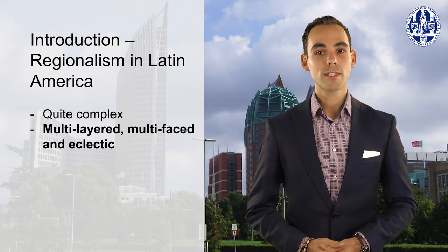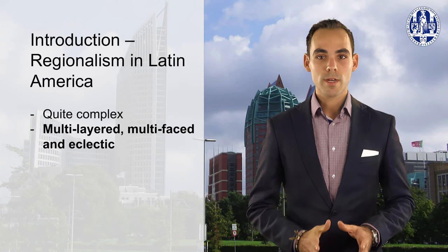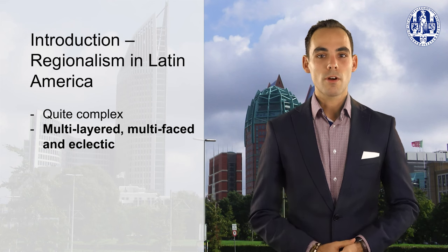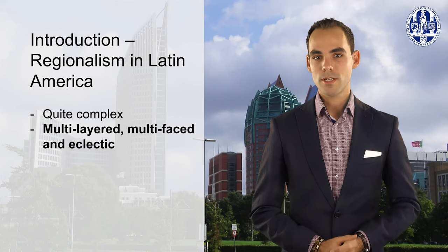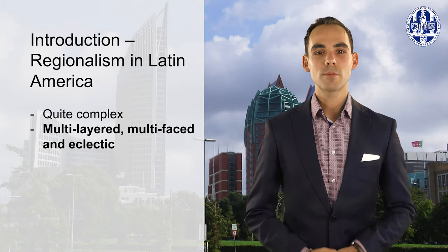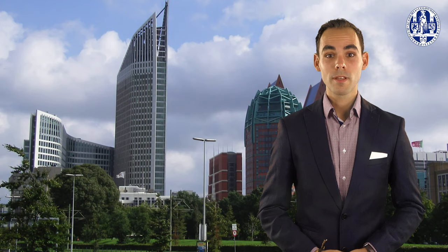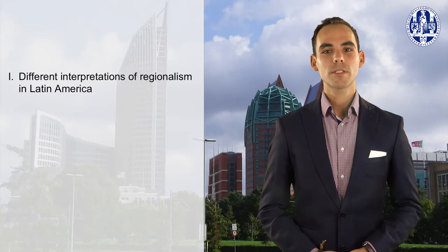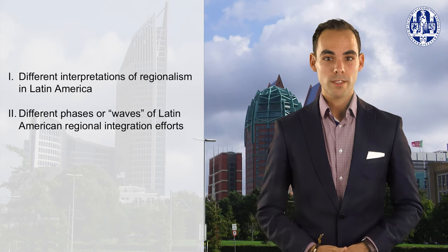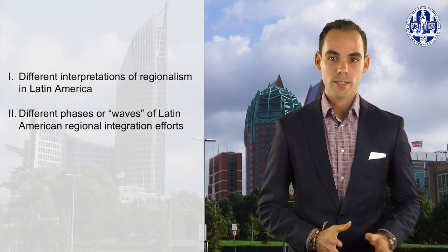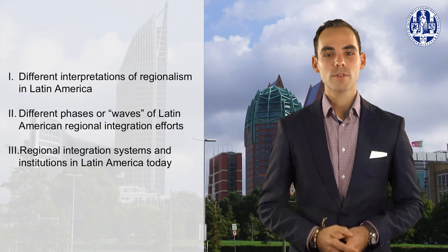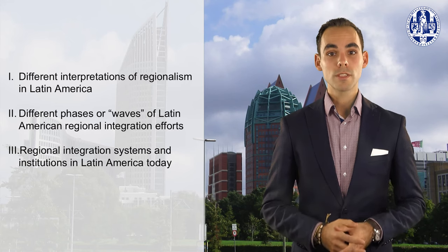As a consequence, if we look at the geopolitical map of Latin America today, we see that it is characterized by a large set of different regional arrangements. These arrangements are both formal and informal in nature and various regional organizations and regional institutions currently coexist. This resulted in what scholars have labelled the 'alphabet soup' of Latin American regionalism. In this video we will first look at the different interpretations of regionalism in Latin America, then at different phases or waves of regional integration efforts, and finally provide an overview of today's most well-known regional organizations to show how multifaceted and multilayered the Latin American regional architecture really is.